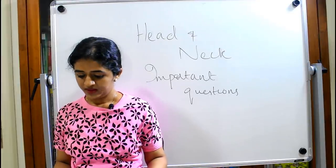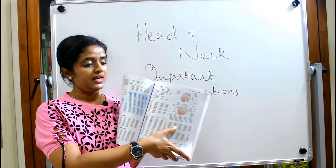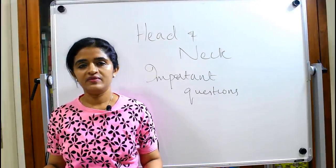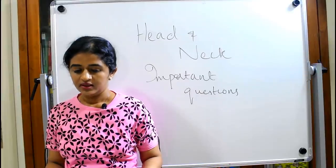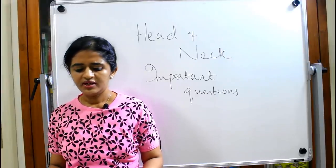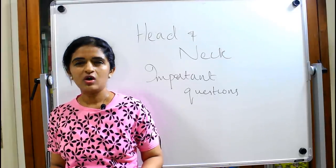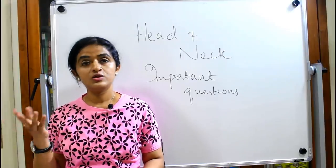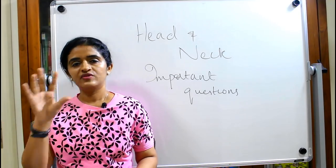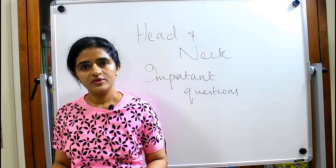Coming to the ear: the external auditory meatus can be asked. The tympanic membrane is a very favorite question — both embryology and its structure. The subdivisions of the middle ear are a very favorite question. The ear ossicles alone can be asked as a short note, along with the different joints between them. For the internal ear, just know how it is made up — internal ear is not as favored for undergraduates, so you need not mug up as much compared to the external and middle ear.